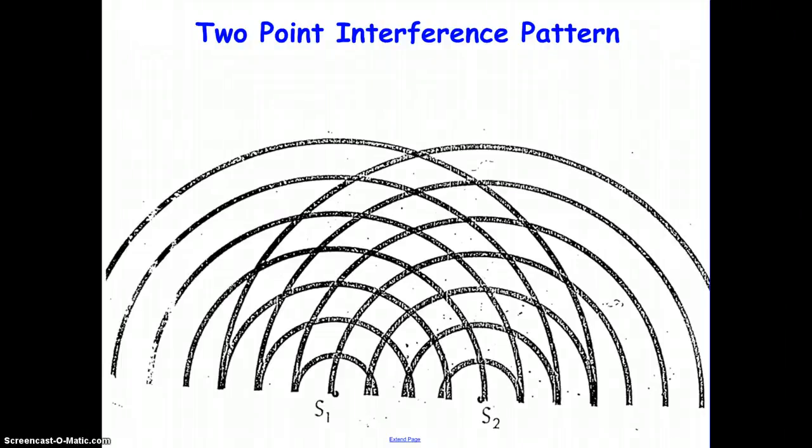In this diagram, the two sources are in phase with each other. S1, source 1, and source 2 are in phase. What that means is that when one is producing a crest, the other is producing a crest at the identical moment.